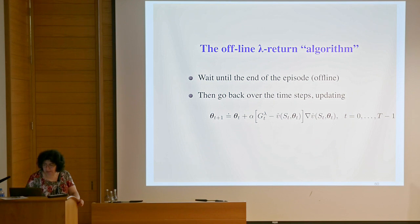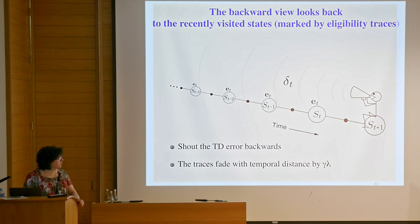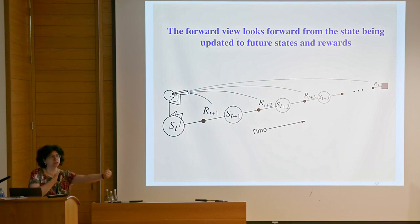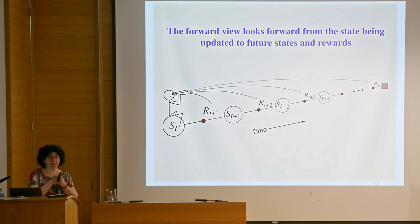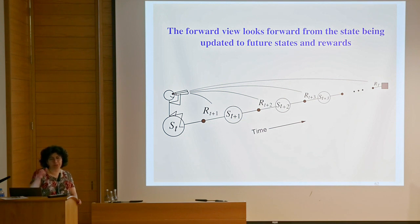The algorithm takes this forward view and flips it back. Instead of the agent sitting at a state and looking at the trajectory forward and taking all samples from that trajectory to do an update, you think of the agent sitting at the next state where it's seen the update and shouting it back along all the trajectory. The amplitude gets attenuated as the states go further back in time, so the previous state gets most of the update, and the other states get a little bit less.